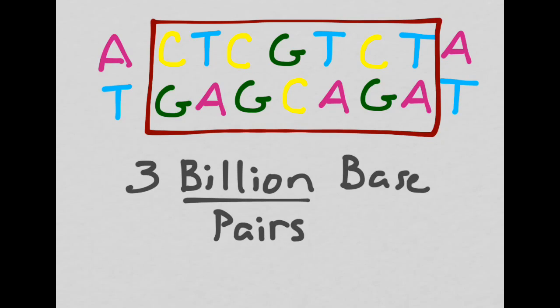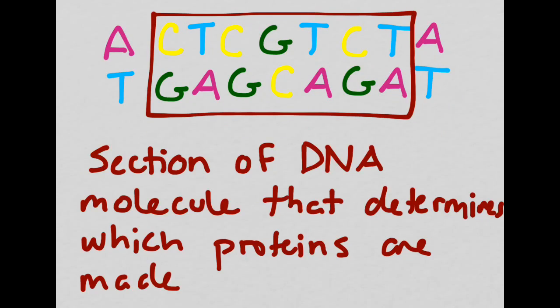For instance, this section of base pairs that's outlined in red might create the proteins that make the earlobe. Some of us have earlobes that dangle, and some of us have earlobes that are attached to the side of our head. If we were to change this sequence in any way, it might change the shape or size of somebody's ear. This section of DNA determines exactly which proteins are going to be made. When it does that, it determines the traits that the offspring is going to have.